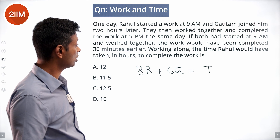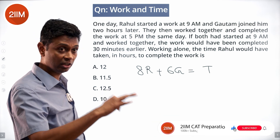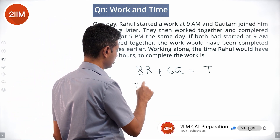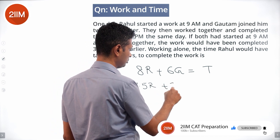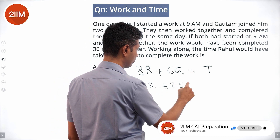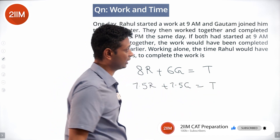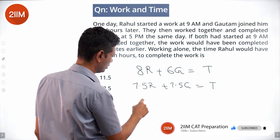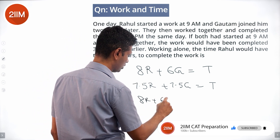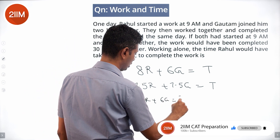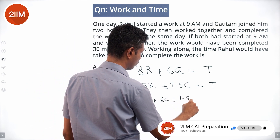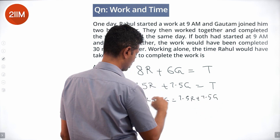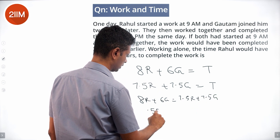If both had started at 9 a.m. and worked together, the work would have been completed 30 minutes earlier. That means 7.5R plus 7.5G would also complete the task. Equating the two expressions: 8R plus 6G equals 7.5R plus 7.5G.